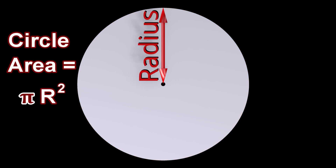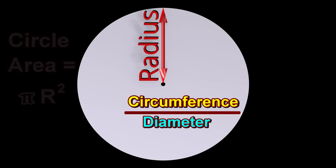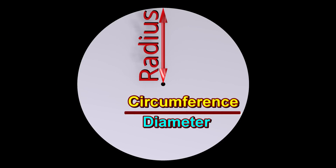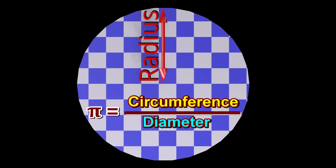For any circle, if we take the circumference of the circle and divide it by the circle's diameter, we always get the same number, regardless of the size of the circle. We have given a name to this number — pi. The definition of pi is the circumference of a circle divided by its diameter. Therefore, the equation for the area of a circle has something to do with its circumference.